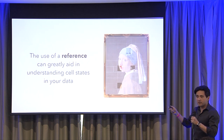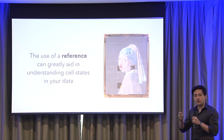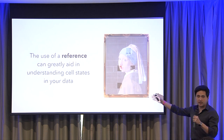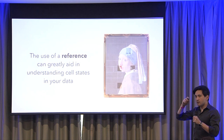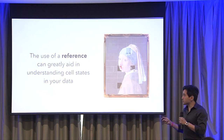Public data is so, so important. You may have an experiment that didn't work too well, but if another dataset exists that already describes the cell state you're looking at, you can leverage it. It makes unusable data usable. It cheapens the cost of a sequencing experiment.